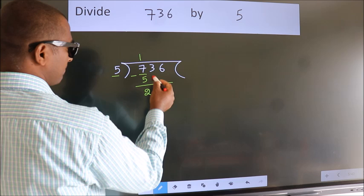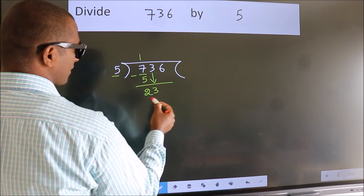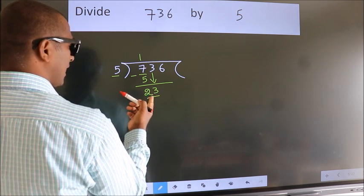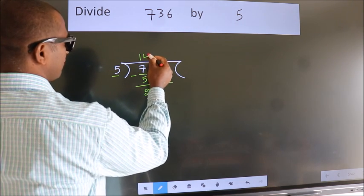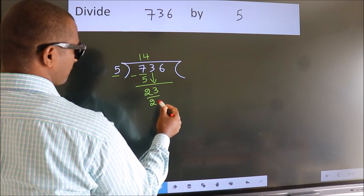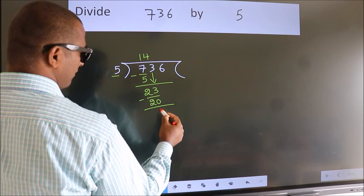After this, bring down the beside number. So 3 down. So 23. A number close to 23 in 5 table is 5 fours 20. Now we subtract. We get 3.